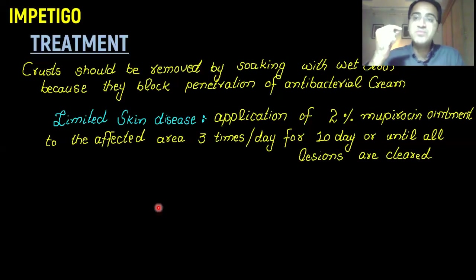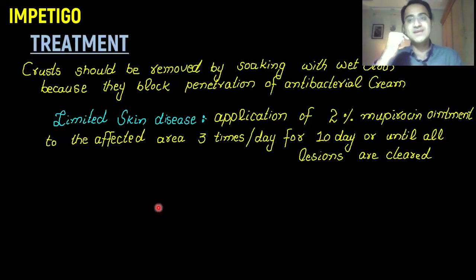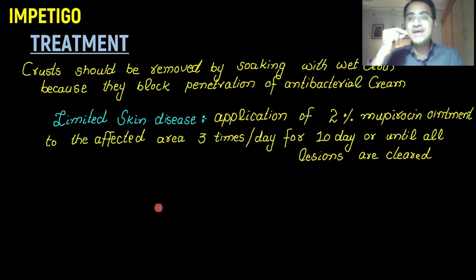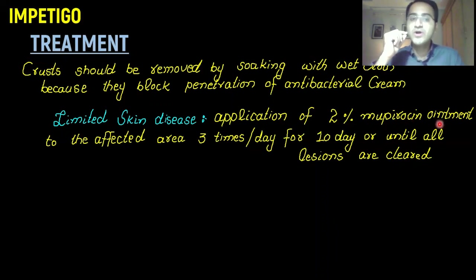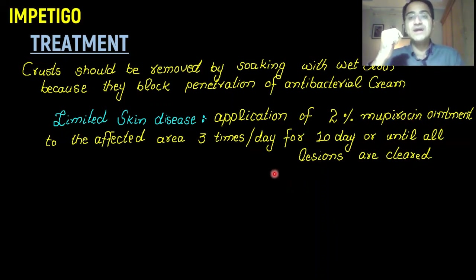Treatment of impetigo includes removal of the crusts using a wet soaked gauze piece, because these crusts inhibit the penetration of antibacterial cream. You need to remove the crusts before applying any antibacterial ointment. For limited skin disease, use two percent mupirocin ointment applied on the affected area three times per day for at least 10 days or until all lesions are clear.